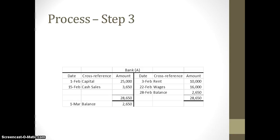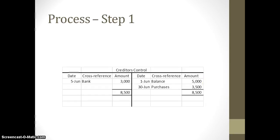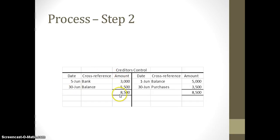Now let me show you that same process but with a liability account — our creditors control. We have a few transactions for the month of June, and as you can see, we've had a balance carried forward from May, so on the 1st of June our balance is $5,000. Step one: total the debit side and the credit side and enter the larger of the two on both sides. This time our credit side was larger, totaling $8,500, so we've put our total of $8,500 on both sides. Step two: we calculate our balance, which this time is $5,500, so the debit side will now sum to $8,500.